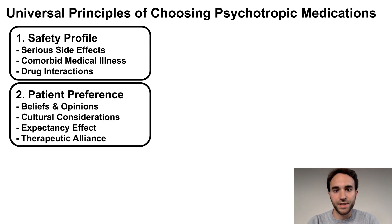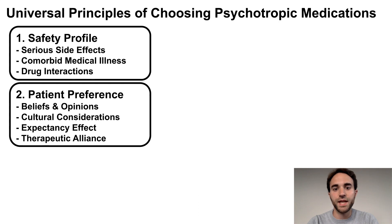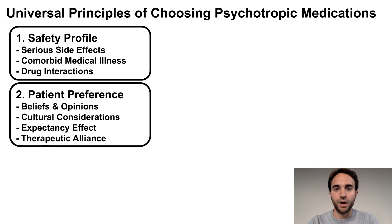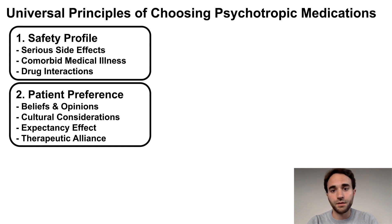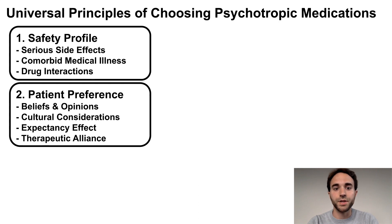Second, consider the patient's preferences. This is the most nuanced principle to master, and involves taking into account the patient's beliefs and opinions regarding medication and mental illness, which could be based on the patient's culture, upbringing, treatment history, or other factors. Sometimes these beliefs may be illogical or not based on scientific fact or majority opinion. However, even in these cases, you need to do your best to understand them and take them into account in your clinical decision making.